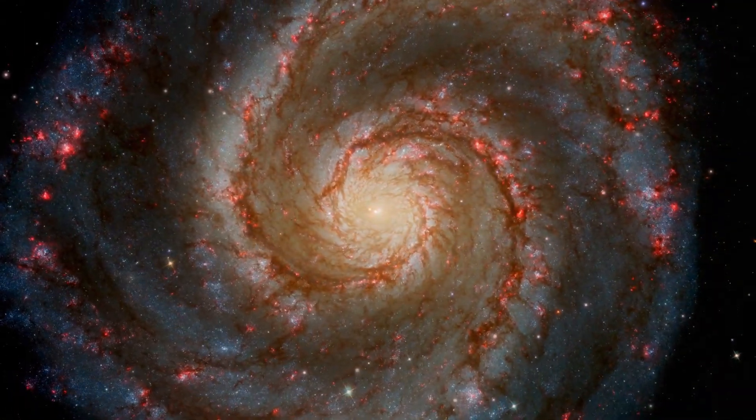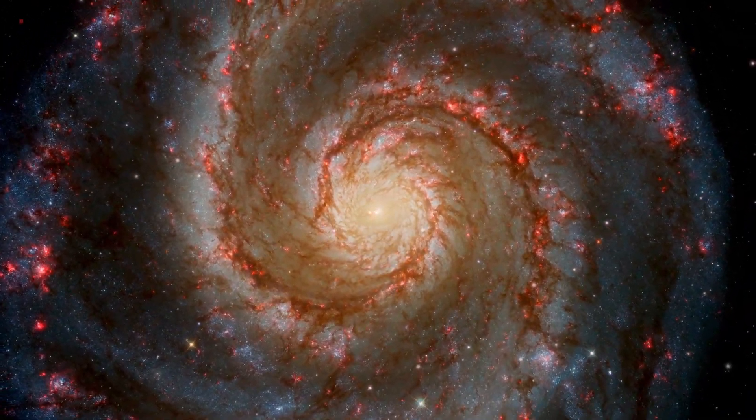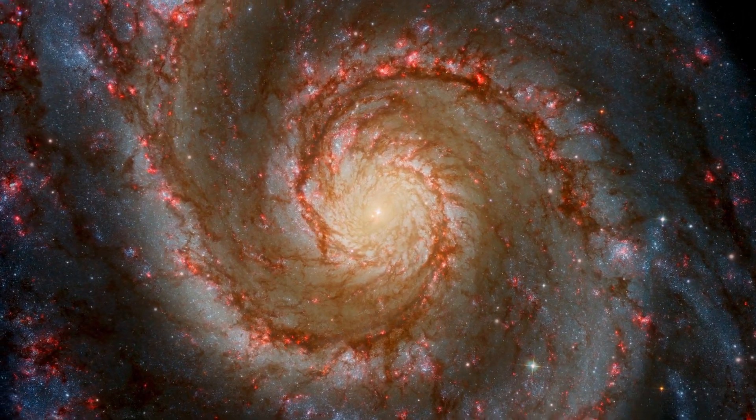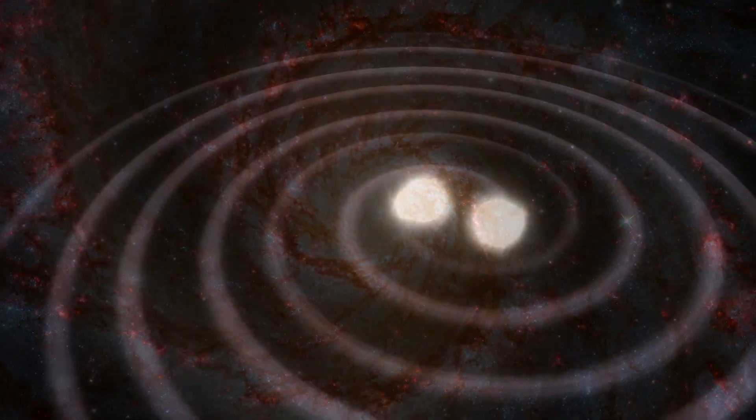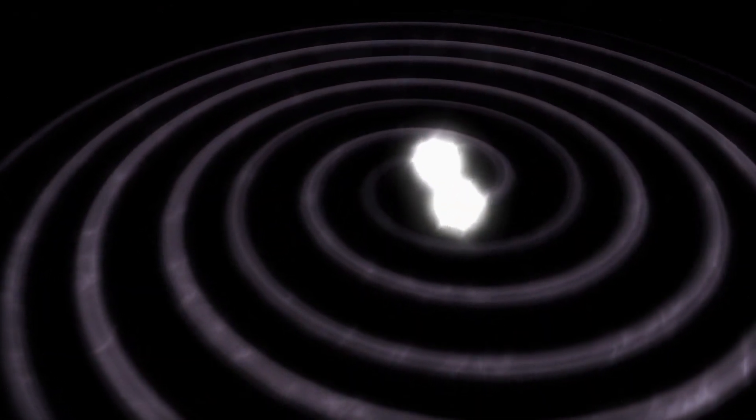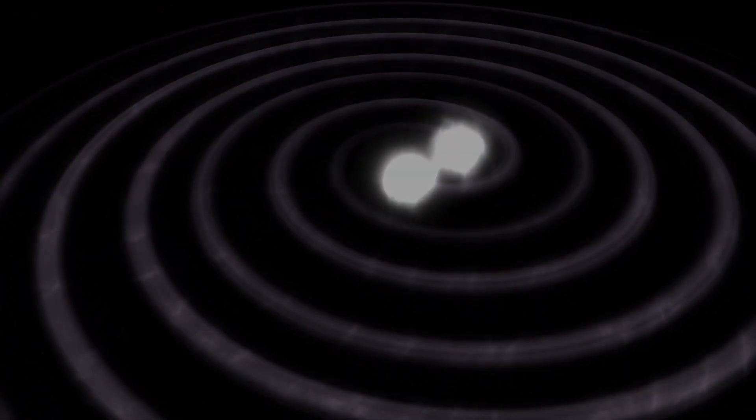Supermassive black holes are often detected indirectly through their influence on the motion of stars in galactic cores, the radiation emitted by their accretion disks, or in some cases by observing the gravitational waves produced by the mergers of supermassive black holes.